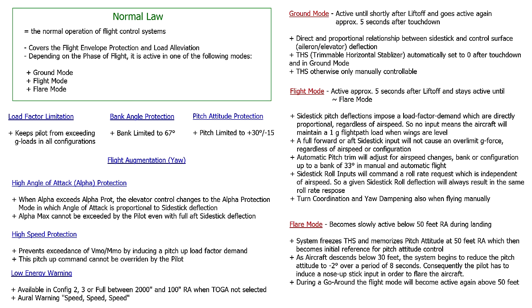After touchdown, the trimmable horizontal stabilizer is automatically reset to zero. The flare mode becomes slowly active when the aircraft descends through 50 feet radio altitude during landing. Here the system freezes the trimmable horizontal stabilizer and memorizes the pitch attitude, which then becomes the initial reference for pitch attitude control. As the aircraft then descends through 30 feet radio altitude, the system begins to reduce the pitch attitude to minus two degrees over a period of eight seconds. This means that the pilot has to induce a nose-up stick input in order to flare the aircraft, simulating the behavior of a conventional aircraft.